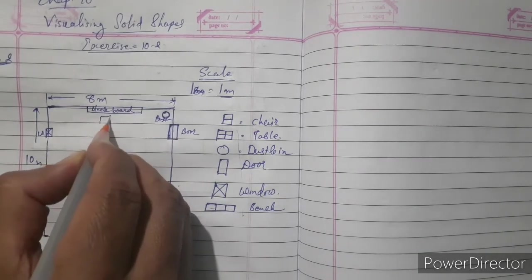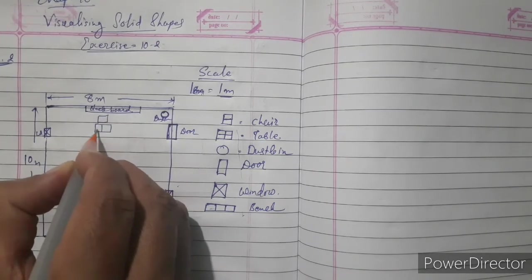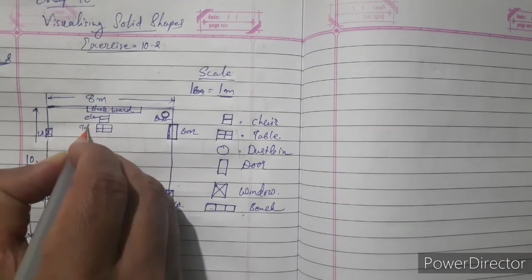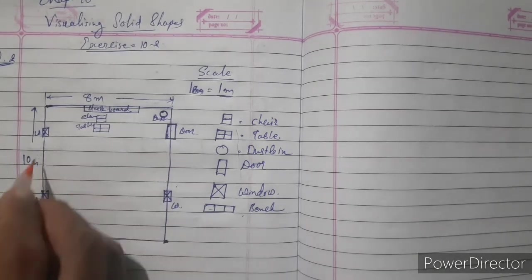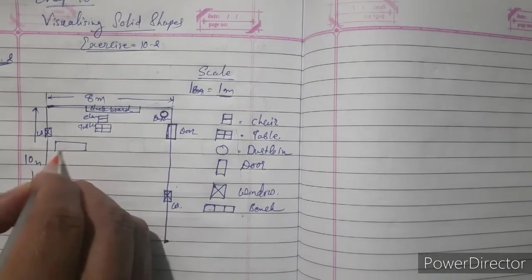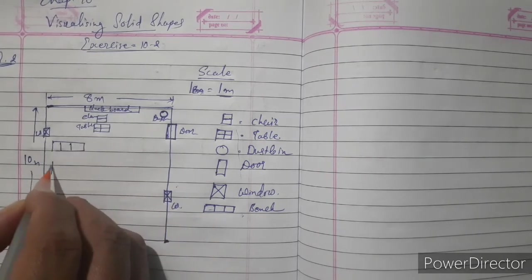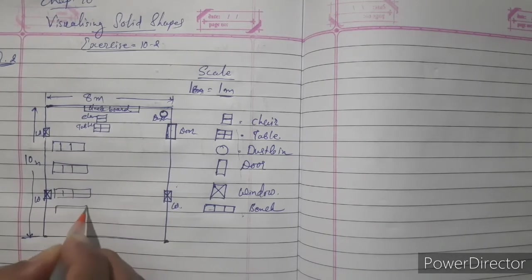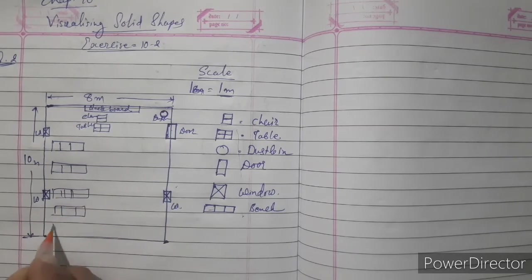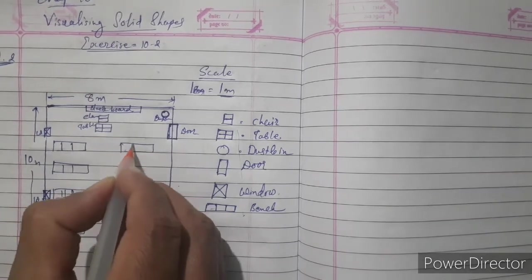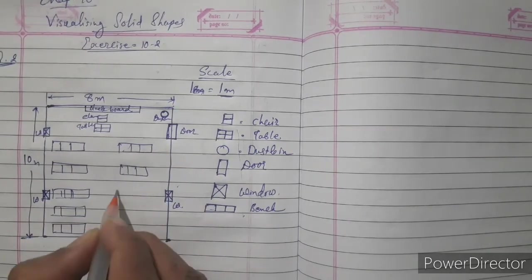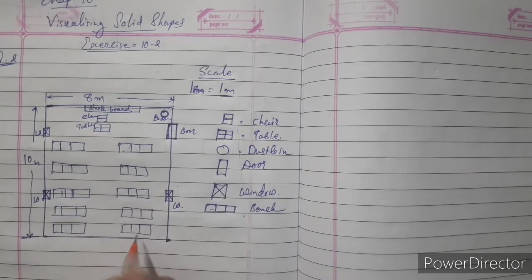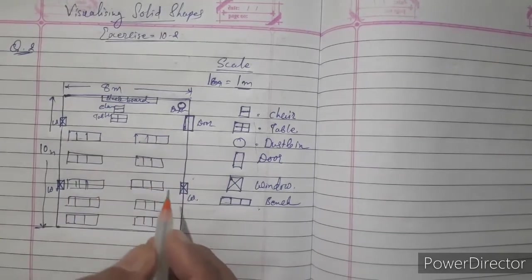Now here the chair and table for teacher. These are the symbols. That is chair and table. And another, the benches are there. So you just draw benches like that. And draw five benches in a row and make two rows for that one. And take proper measurement with scale. Proper measurement for that one.